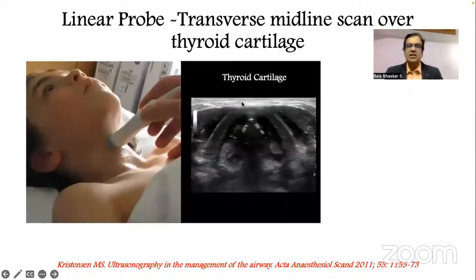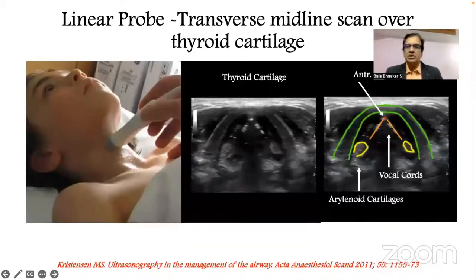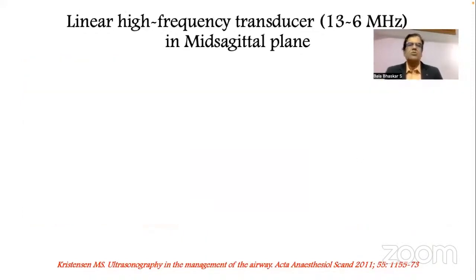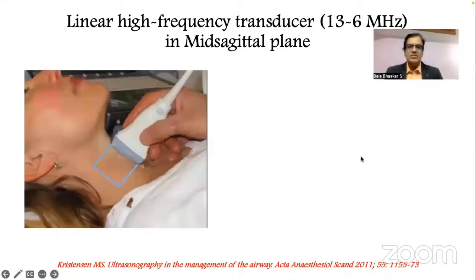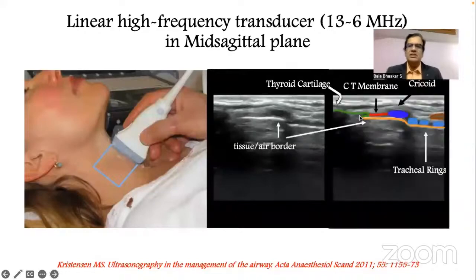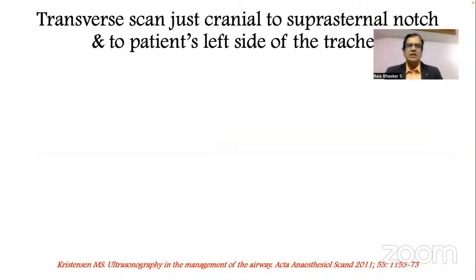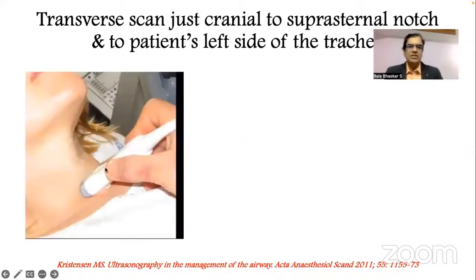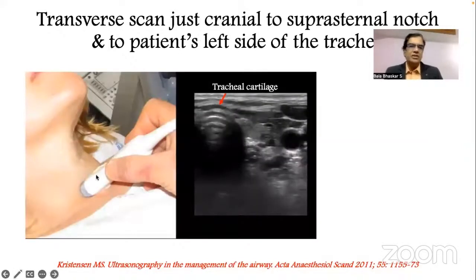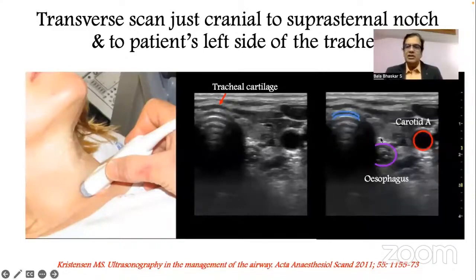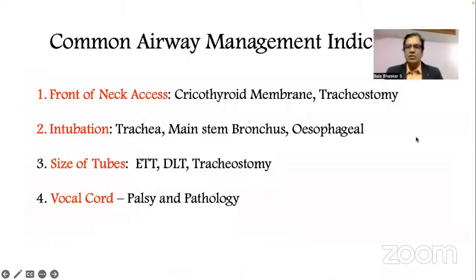When a linear probe is placed transversely over the thyroid cartilage, you can see the thyroid cartilage, anterior commissure, vocal cords, and arytenoid cartilages. Placing the linear probe in the midsagittal plane gives a picture of the thyroid cartilage shadow, then the cricoid cartilage shadow, with the cricothyroid membrane between them, and further down the shadows produced by the tracheal rings. A transverse scan at the suprasternal notch, slightly to the patient's left, shows a tracheal ring and the esophagus as a circular structure alongside the carotid artery.